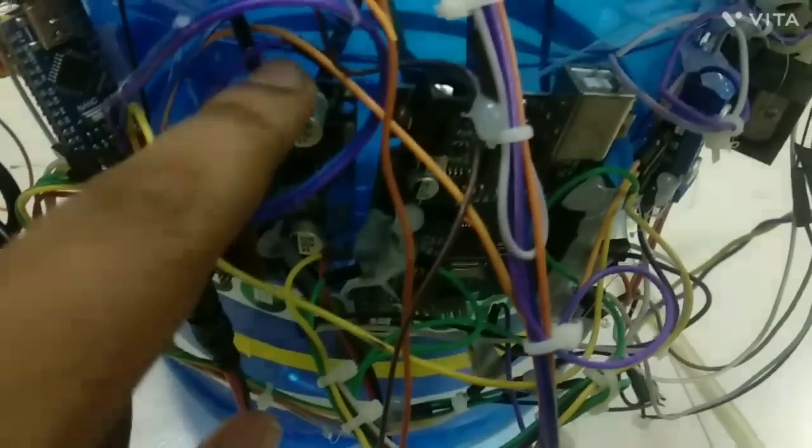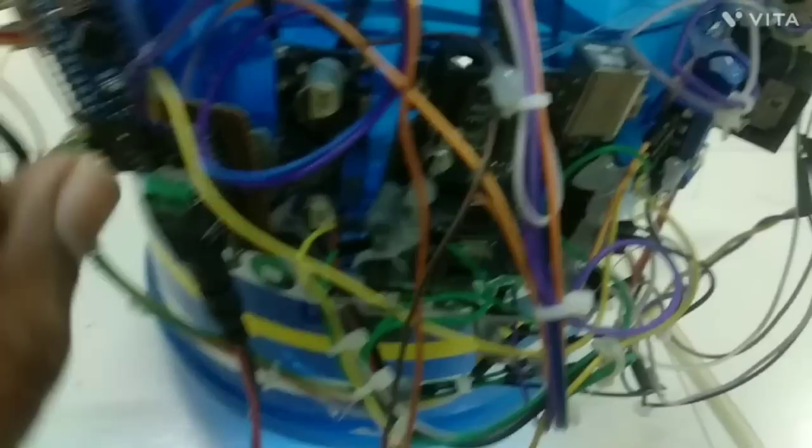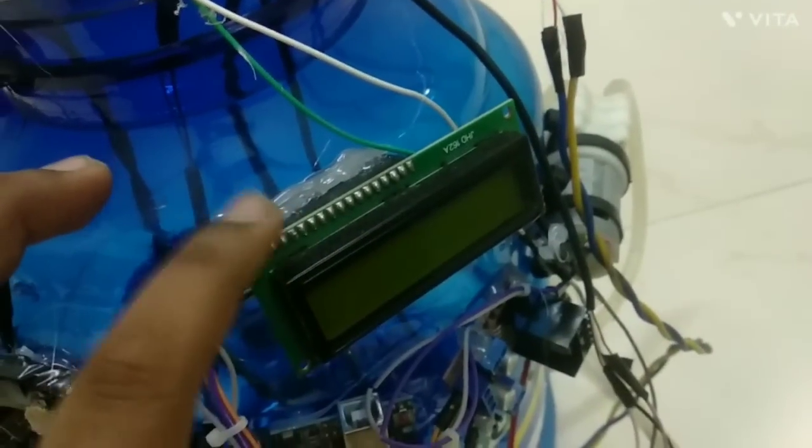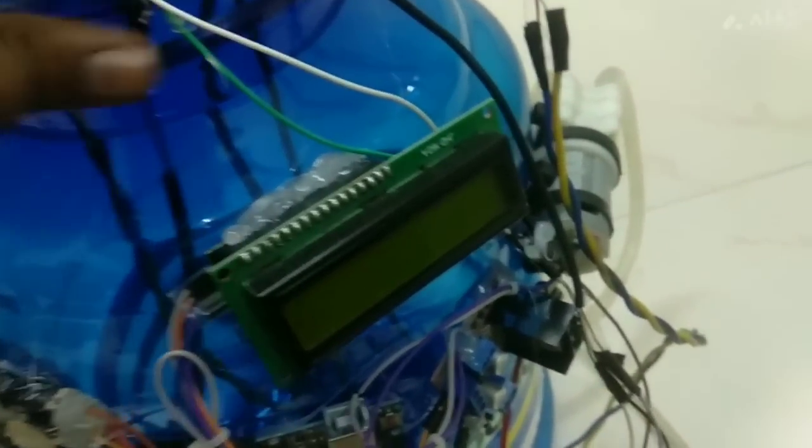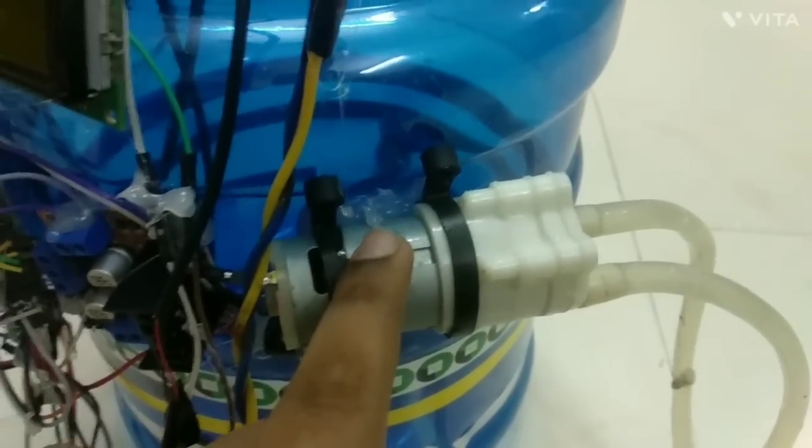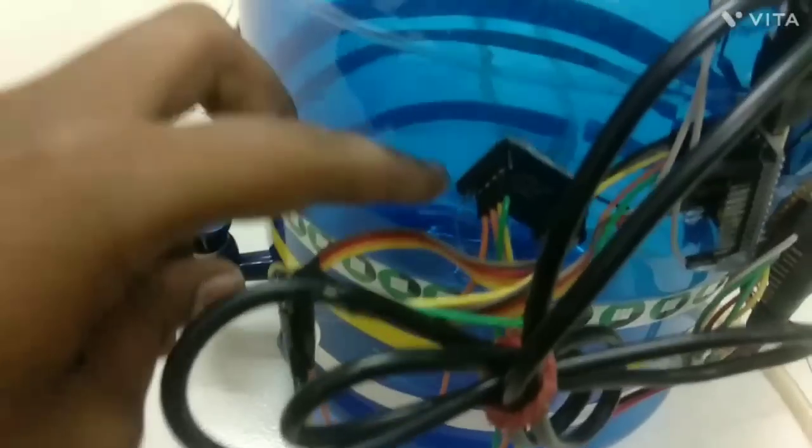This board here is a step down transformer board which just reduces the current so that it could be digested by Arduino. This is the LCD over here which displays everything. Here we have the pump which triggers automatically when the level is on the third level. This is the motor controller board. And this is our LoRa.